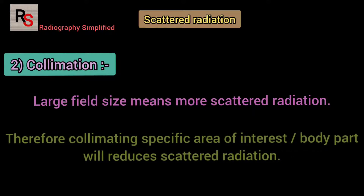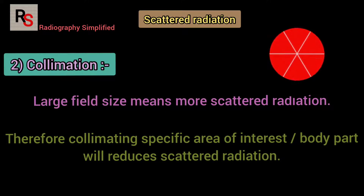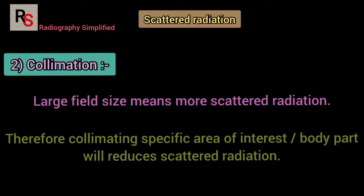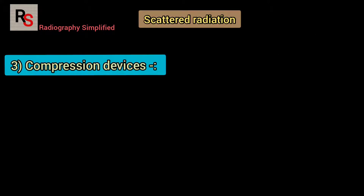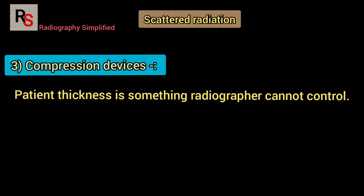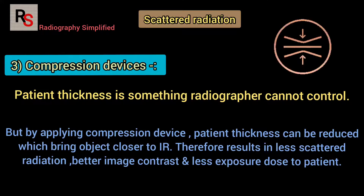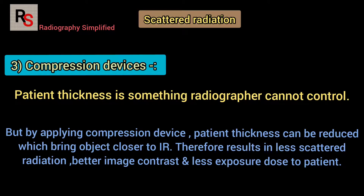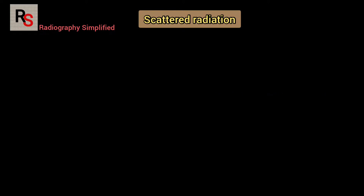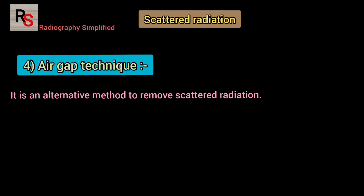Collimation: since large field size means more scattered radiation, collimating to the specific region of interest or body part will reduce scattered radiation. Compression devices: patient thickness is something a radiographer cannot control, but applying compression devices reduces patient thickness and brings the object closer to the image receptor, resulting in less scattered radiation, better image contrast, and also reduces patient exposure dose.